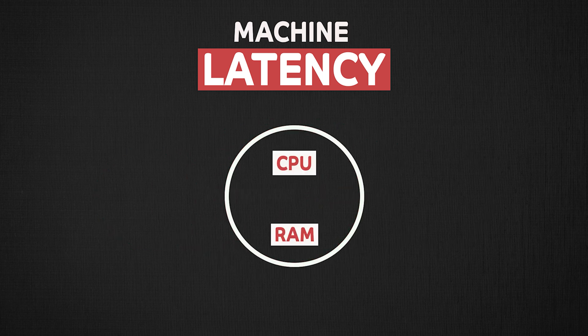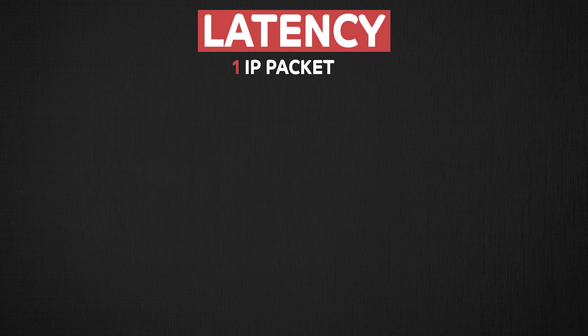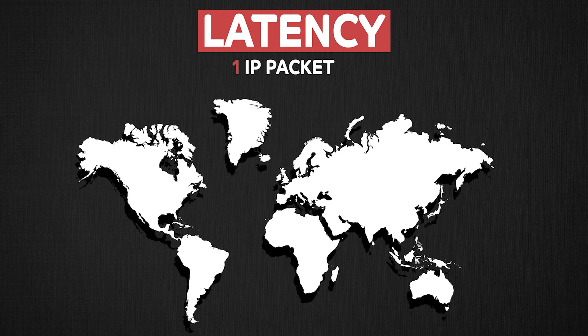Machine latency is when you're reading data from memory or disk. An estimate for how long it takes to send one IP packet — which is typically as small as just 1,000 bytes — as a network request from California to Netherlands and back to California is 150,000 microseconds. That is latency.